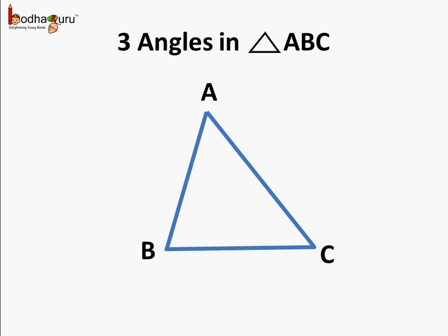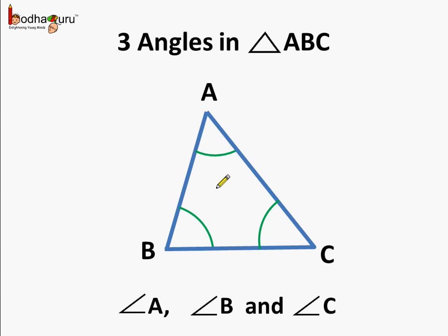So what do we learn? We see there are three angles in a triangle: angle A, angle B, and angle C. So the three angles are angle A, angle B, and angle C in triangle ABC.